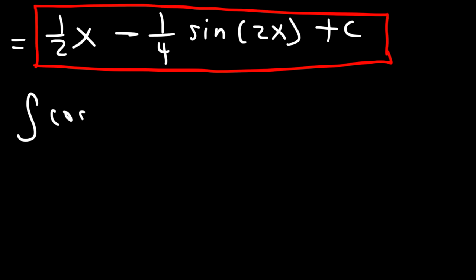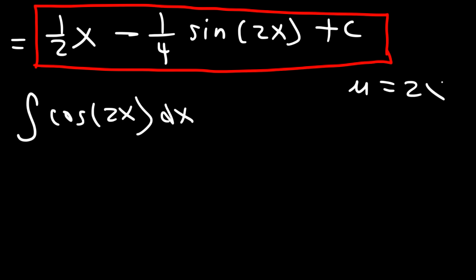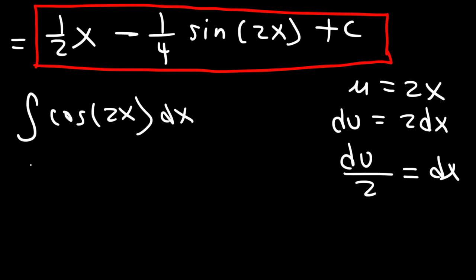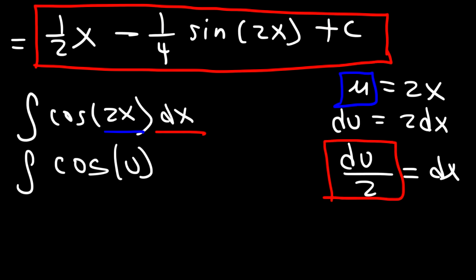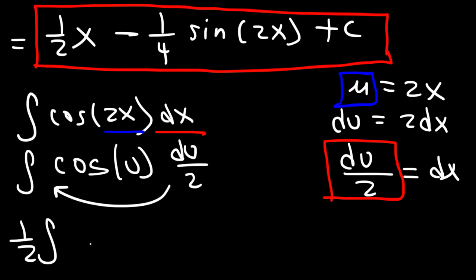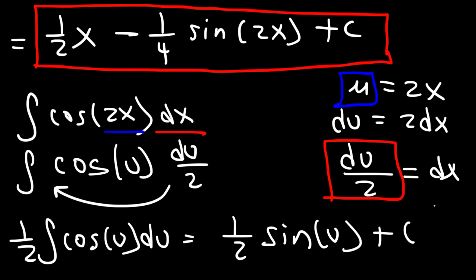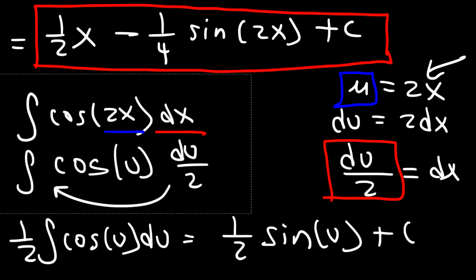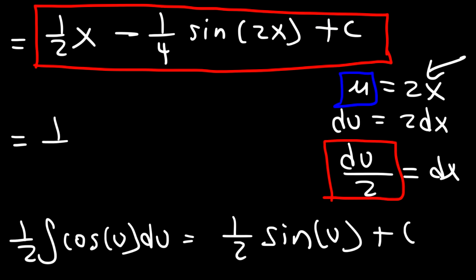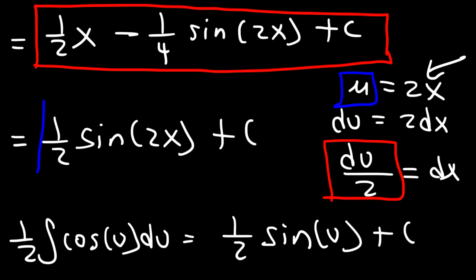For those who want to see why the integral of cosine 2x is 1/2 sine 2x, you need to use u substitution. If you make u equal to 2x, du is going to be 2 times dx. Solving for dx, it's du divided by 2. So we replace 2x with u and dx with du over 2, then move the 1/2 to the front: it's 1/2 integral of cosine u. The antiderivative of cosine is positive sine, so replacing u with 2x gives us 1/2 sine 2x plus c.